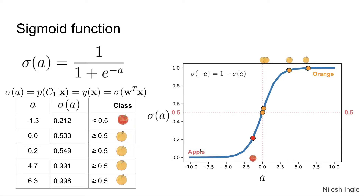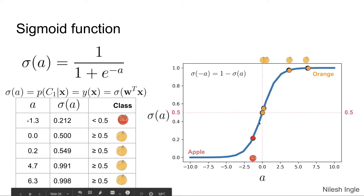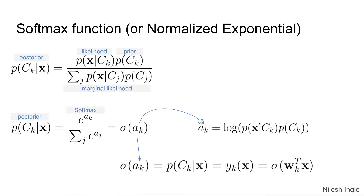We'll later look at the effect of changing these threshold values. We can set thresholds lower or higher depending on what type of misclassification is acceptable — for example, whether it's more acceptable to misclassify some apples as oranges or some oranges as apples. That will be covered in future videos. The key takeaway is that the sigmoid function is really helpful in binary classification problems.